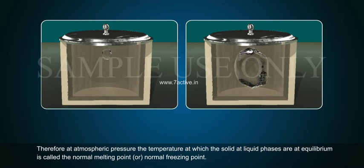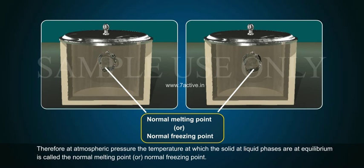Therefore, at atmospheric pressure, the temperature at which the solid and liquid phases are at equilibrium is called the normal melting point or normal freezing point.